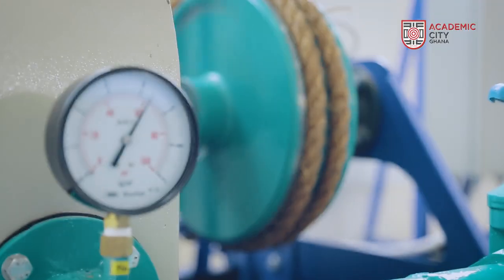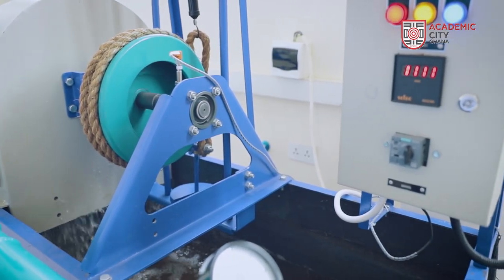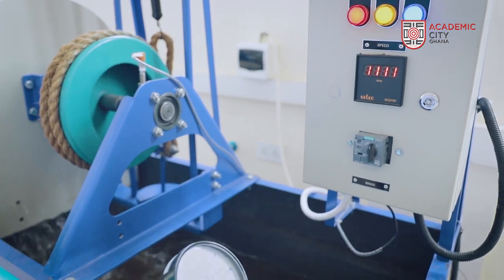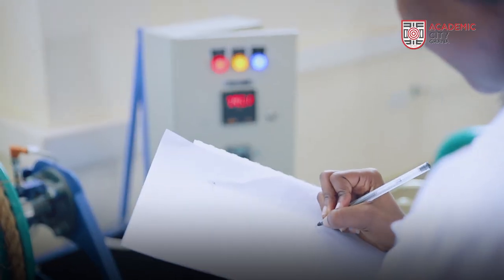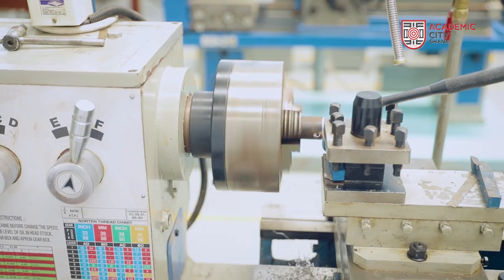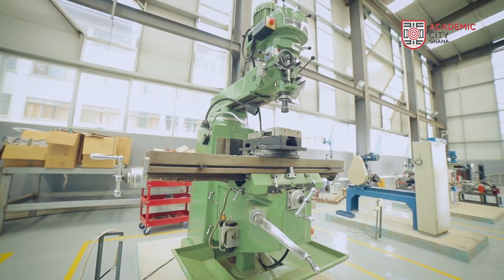What we have here are real engineering equipment. They are not teaching aids, which means when you graduate from Academic City and go into industry, these are the same equipment that you're going to be using. In today's industry, to make anything, you need your lathes, you need your milling machines, and we have them all here.